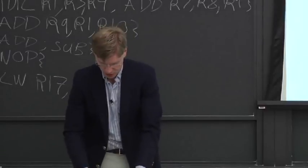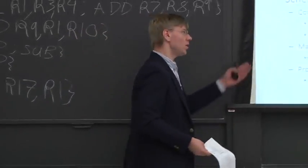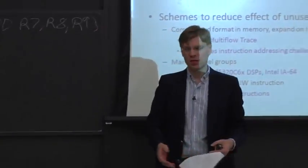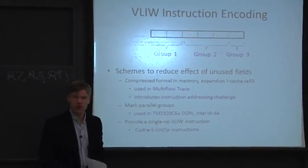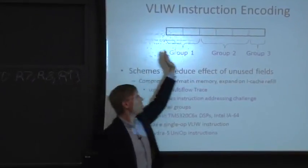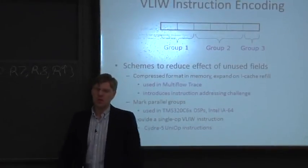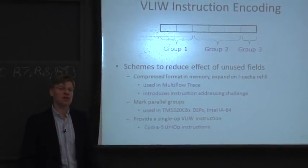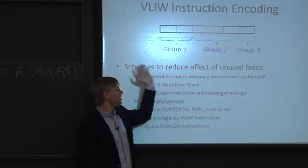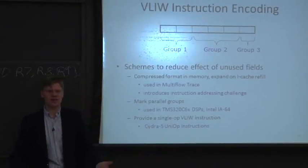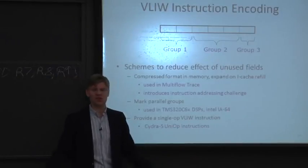We left off talking about how to encode instructions in VLIW. In a VLIW instruction encoding, you have a very long instruction word — many, many bytes. If you look at something like the Multiflow trace processors, they had very long instruction words. In their largest machine configuration, they could execute something like 20-some instructions.